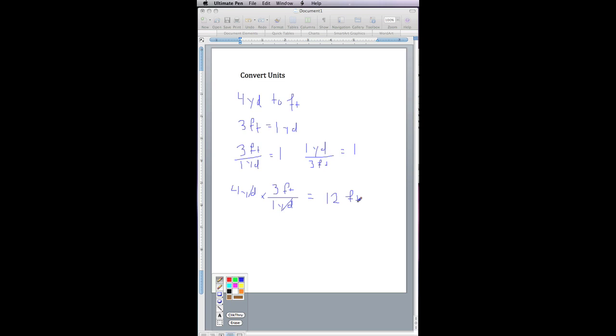This method is sometimes called the foolproof method, because if we get the ratio upside down, here we would multiply 4 yards by 1 yard over 3 feet. We would see that nothing would cancel out. The yards don't cancel because they're both in the numerator. So that tells us that we did it wrong.